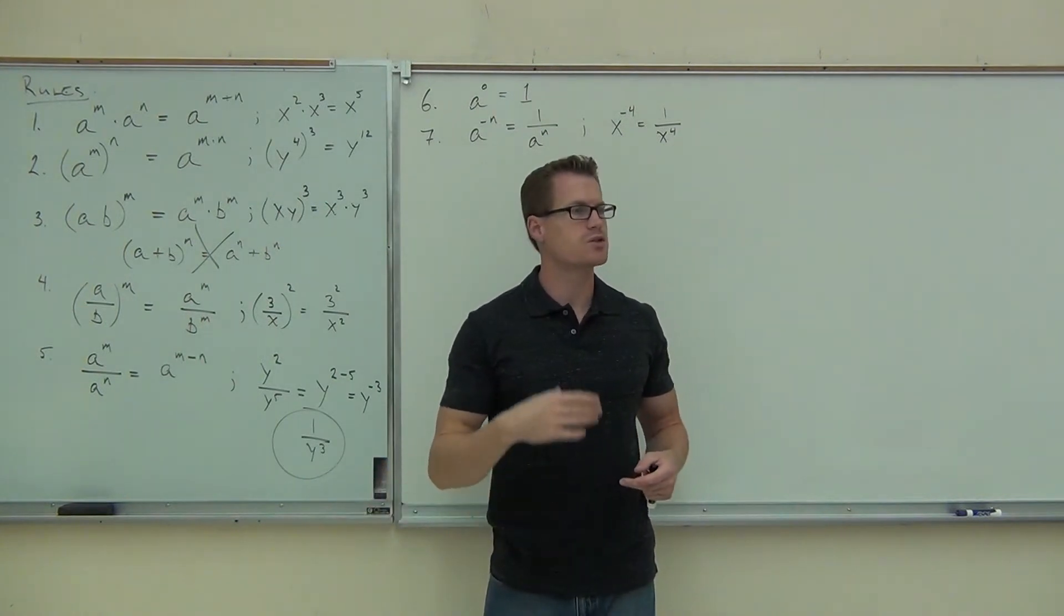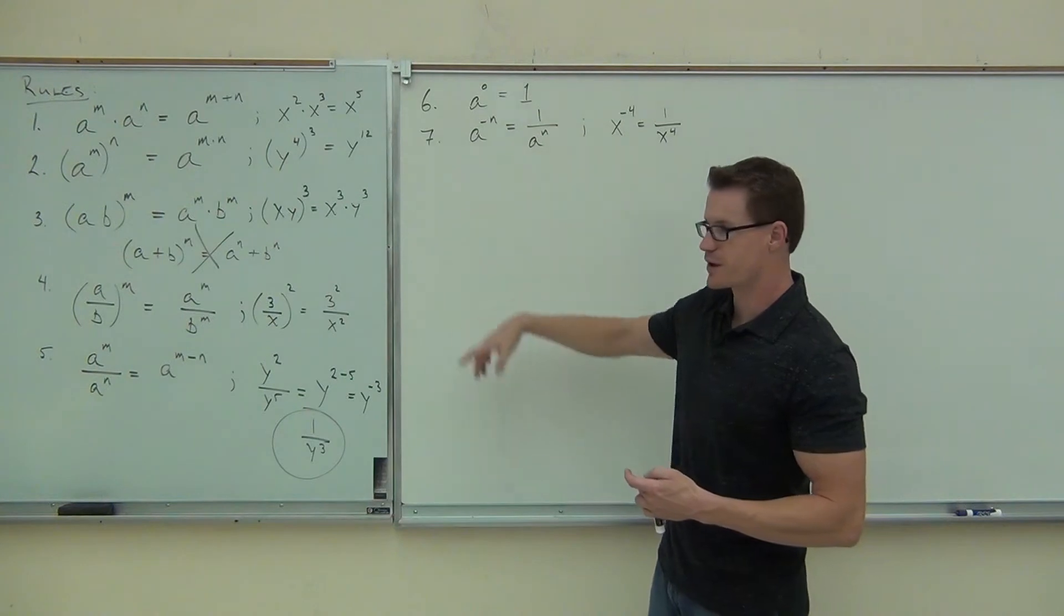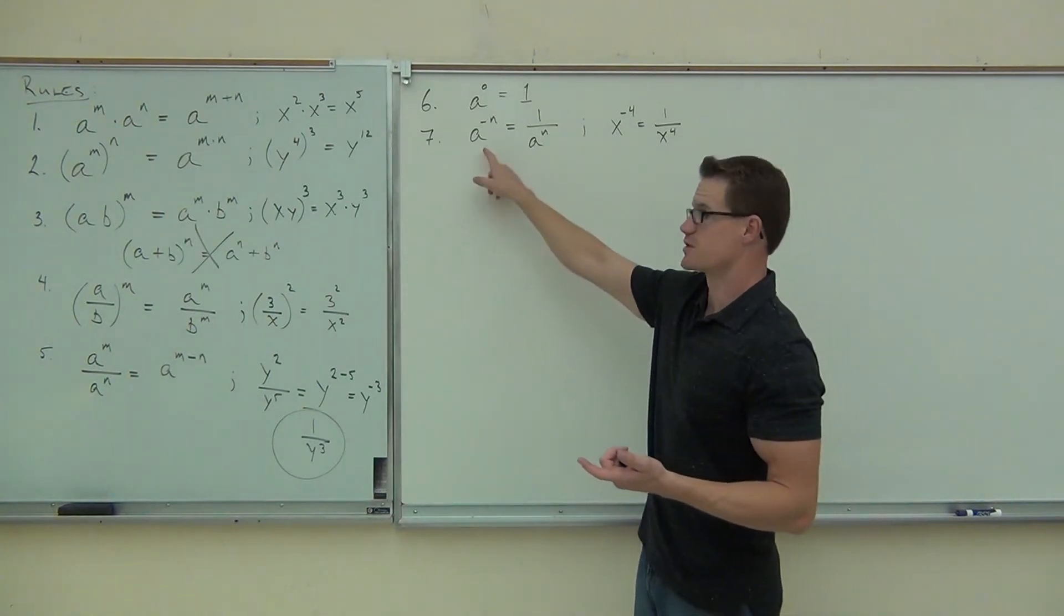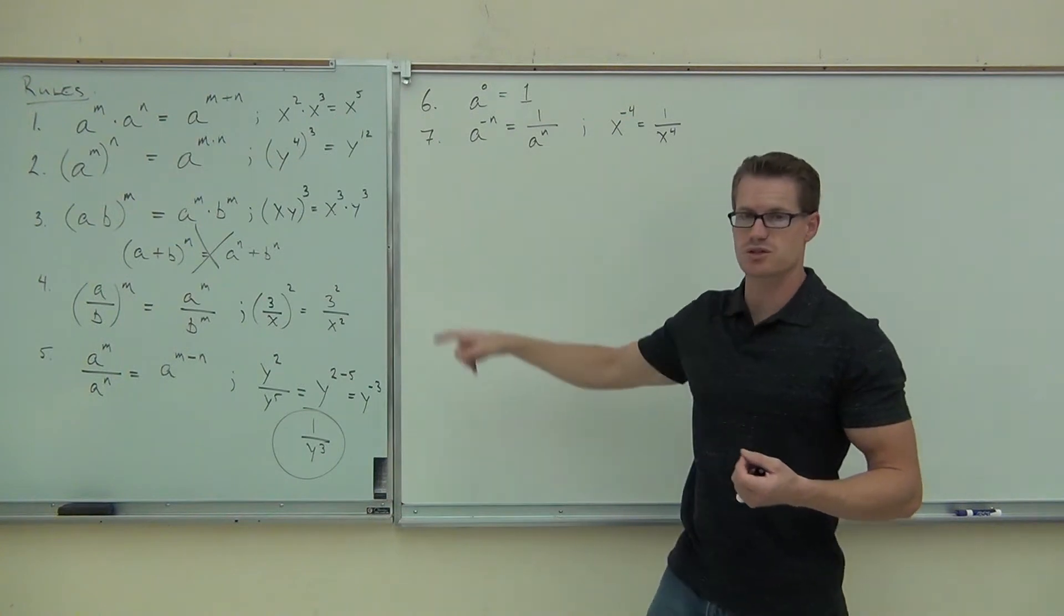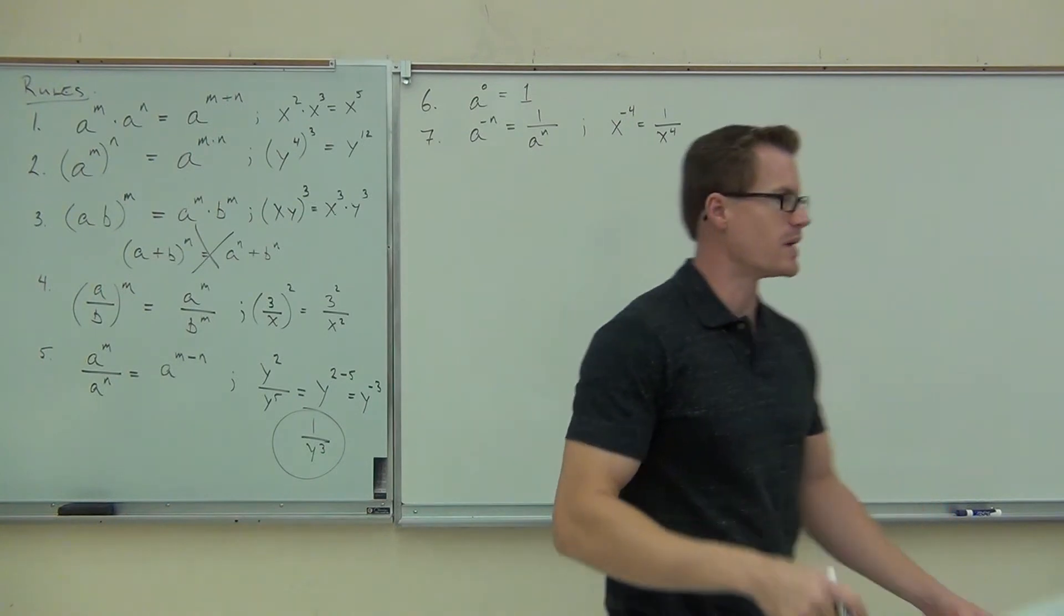What you need to know is that every one of these rules works exactly the same way for rational exponents as it does for whole numbers. I gave you some integer exponents, but right now I'm going to give you those fraction exponents. They work the same. As long as you stick with these rules, there's only seven of them. Are you guys ready to try some examples here?